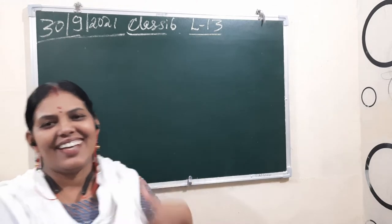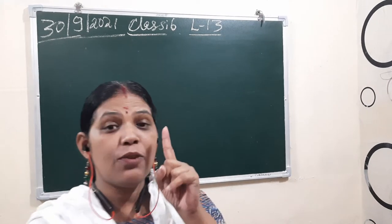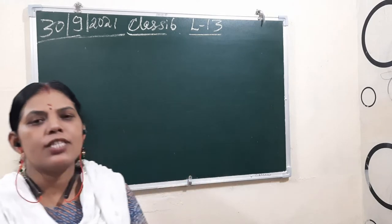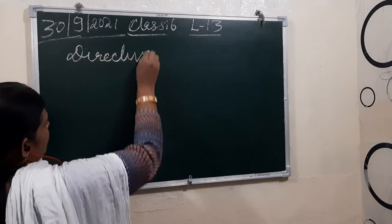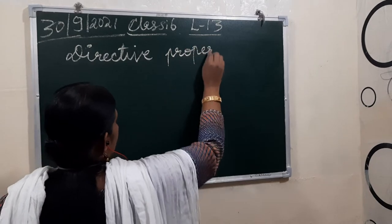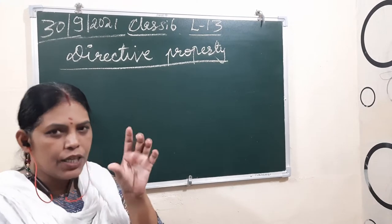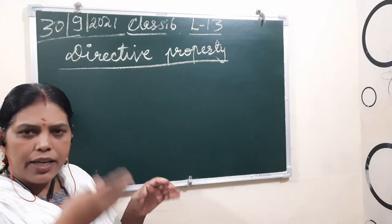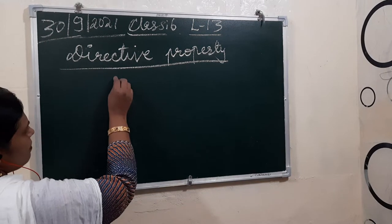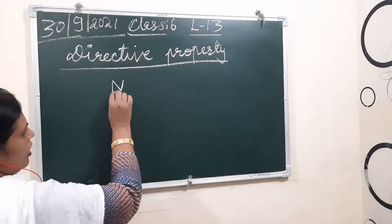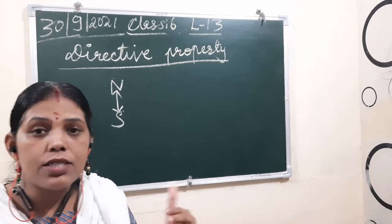Good morning children. Have you read yesterday's topic? In that I explained the properties of the magnet. The last property I explained is the directive property of the magnet. In this I explained that if you suspend a magnet freely, it rotates and moves, and afterwards it comes to a resting place — that resting place is in the north-south direction.